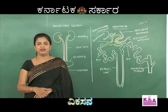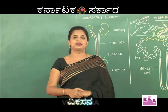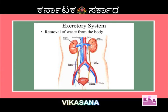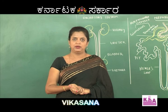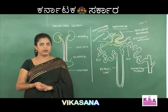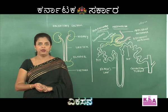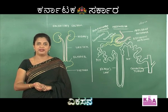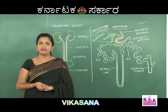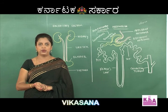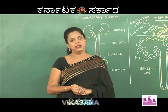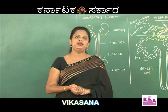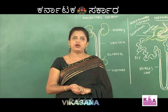Excretion is the removal of nitrogenous waste from the body. There are various types of excretory animals that excrete nitrogen waste in different forms. Ureotelic animals, like human beings, excrete urea in a diluted liquid form. Uricotelic animals, like birds, release nitrogen waste as uric acid. Ammonotelic animals, like fishes, release ammonia, which is very toxic and must be released in water.